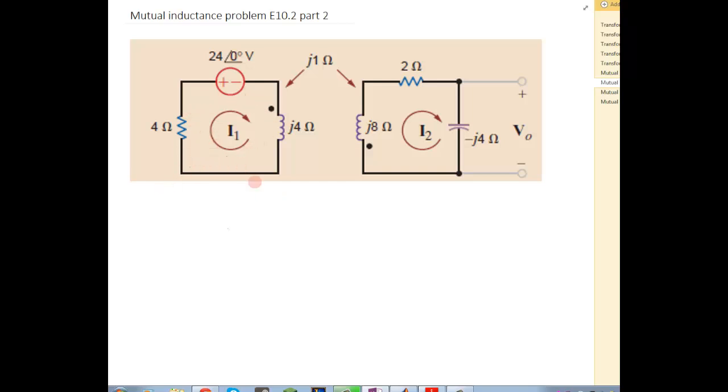Kirchhoff's voltage law around this loop is 4 times I1 plus 24 volts plus I1 times 4J. We're going to add our mutual inductance term times the current through the mutual inductor.